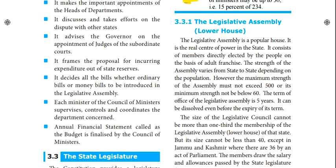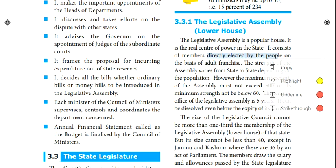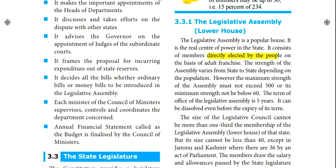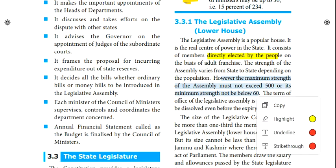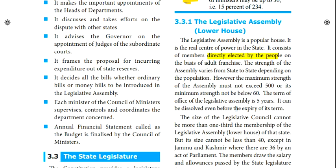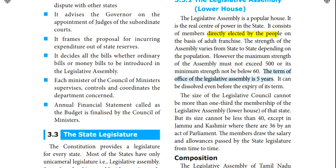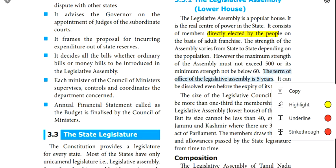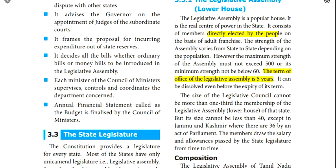MLA is a very popular house — it is directly elected by the people. The maximum strength of a legislative assembly is 500, and the minimum strength is 60. The term of office is 5 years.